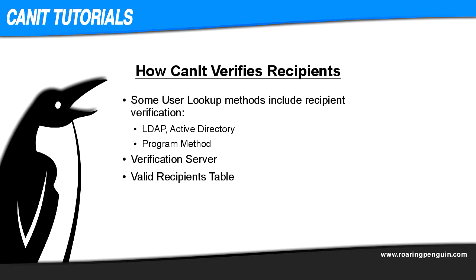Now that we know what recipient verification is and why we need it, let's find out how to set it up. CANET can verify recipients in three ways. First, there are some user lookups that include recipient verification: LDAP, Active Directory, and program methods. Of course, for a program lookup, the validation only works if the program being used supports it. Then there is the most common option, a verification server. And finally, there is the valid recipients table.